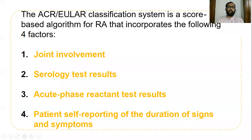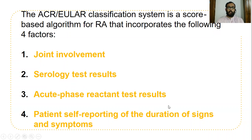The ACR/EULAR classification system is a score-based algorithm for RA. It includes four components: first, joint involvement; second, serology test results, mainly anti-CCP; third, acute phase reactant test results — CRP and ESR; and fourth, the duration of signs and symptoms.